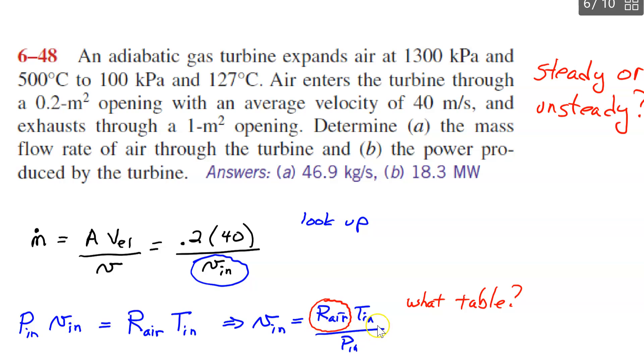So then I can solve that equation for the v_in. So it's just r times temperature over pressure. I have the temperatures and the pressures. So if I can find the r, I can do it. Now what table do you use to get r? See if you can find it.